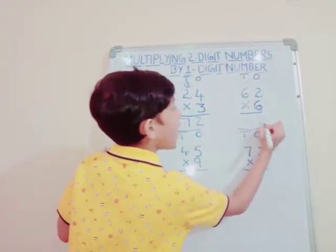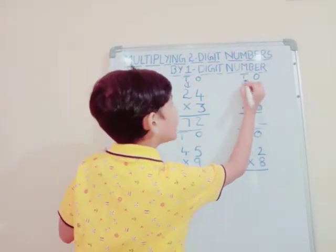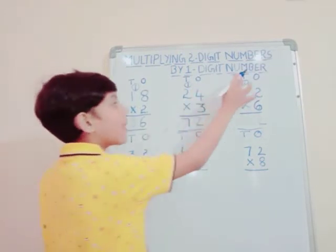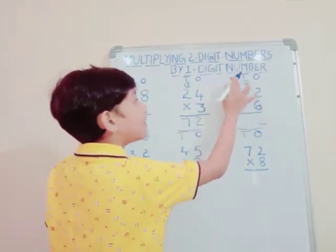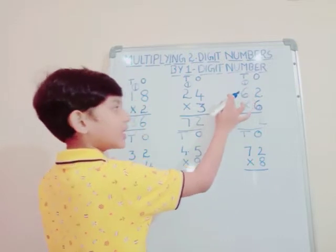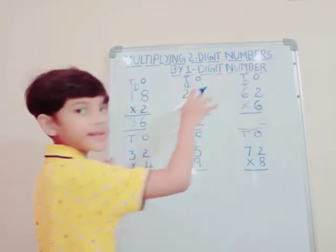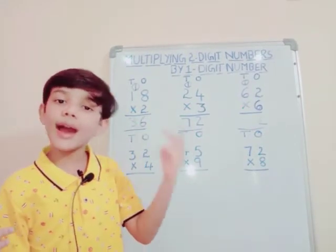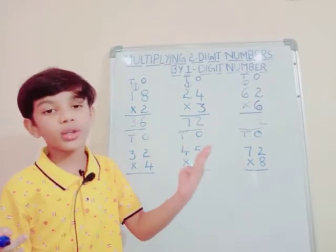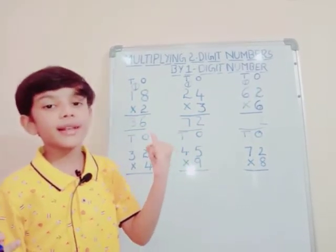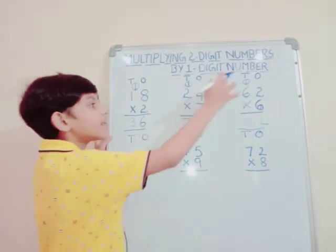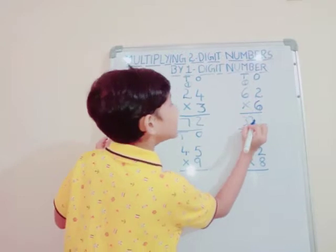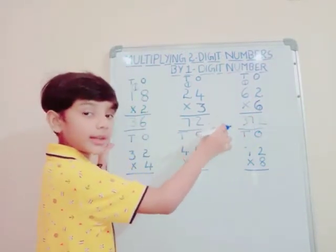We should write 2 and carry up 1 in the 10's place. Don't forget to carry up 1 in the 10's place. Now the 10's place — we should multiply the 10's digit number by 6. That is: 6×1=6, 6×2=12, 6×3=18, 6×4=24, 6×5=30, 6×6=36. Then 36 plus 1 equals 37.